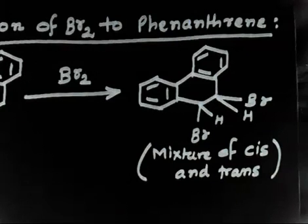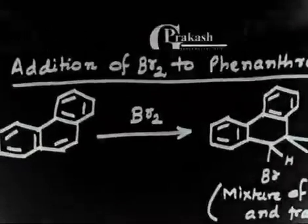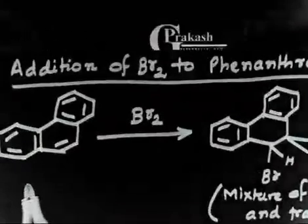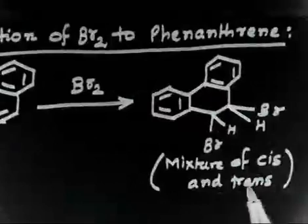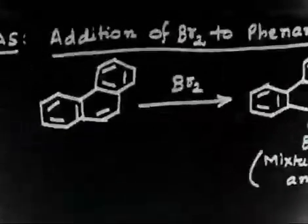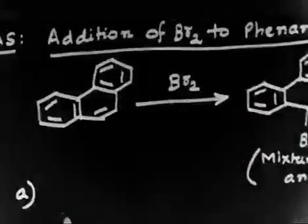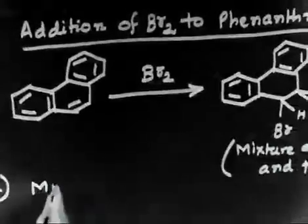The first part of the question says: bromine adds to phenanthrene to give a mixture of cis and trans addition products. So if you have phenanthrene and addition of bromine to phenanthrene gives a mixture of cis and trans products, we have to write a mechanism for this reaction.